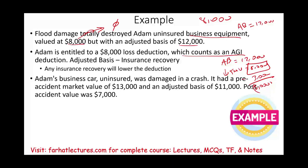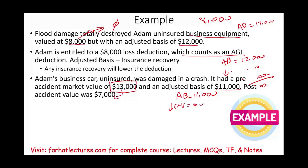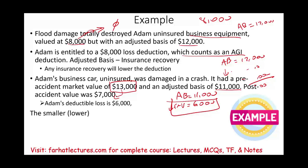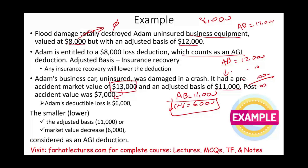Adam's business car, uninsured, was damaged in a crash. It has a pre-accident fair market value of $13,000, an adjusted basis of $11,000, and a post-accident fair market value of $7,000. The adjusted basis equals $11,000. The reduction in fair market value equals $6,000 (from $13,000 to $7,000). We take the lower of the two, which is $6,000. Adam's deductible loss is $6,000 — treated as a deduction for AGI, assuming no insurance proceeds.